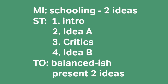The main idea is that the passage is about two theories of schooling. For structure: the first paragraph is the introduction, the second paragraph is about theory A, paragraph three covers the critics of theory A and introduces theory B which talks about the confusion effect, and the fourth paragraph is all about theory B. The tone is balanced — the author is generally unbiased, just presenting the two theories without arguing for one or the other.